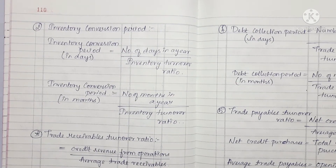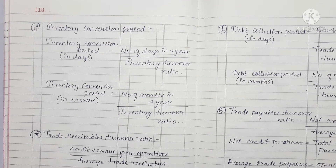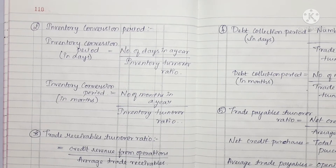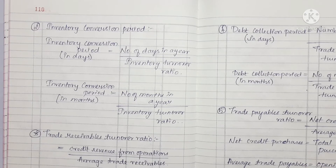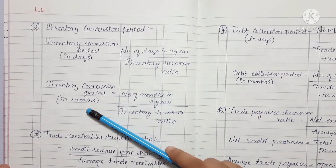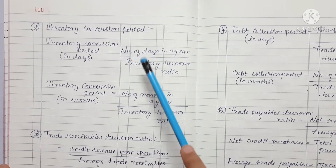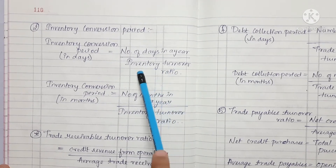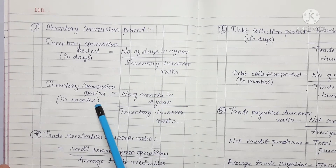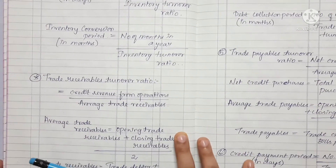At the end of Inventory Turnover Ratio, we also find the Inventory Conversion Period. Inventory Conversion Period equals number of days divided by Inventory Turnover Ratio to get days, or number of months divided by Inventory Turnover Ratio to get months.